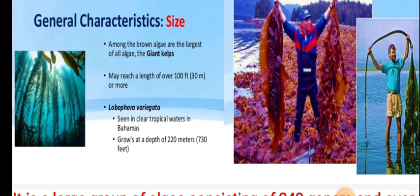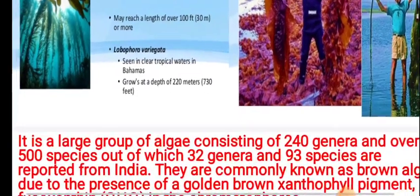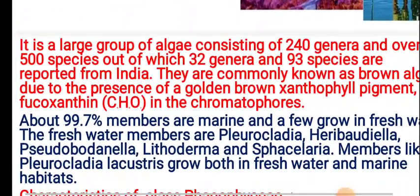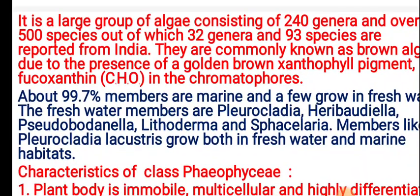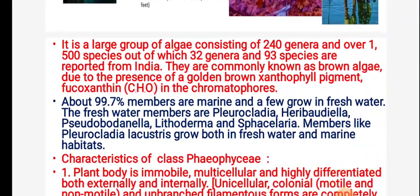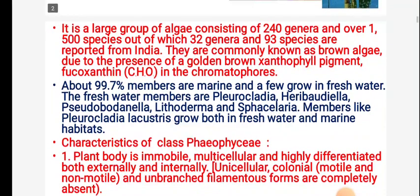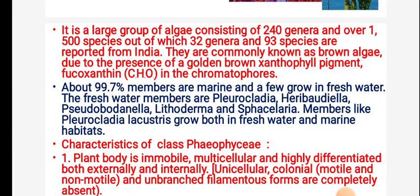The growth is very abundant. As a large group of algae, it consists of 240 genera and about 1500 species, out of which 32 genera and 93 species are reported from India. They are commonly known as brown algae due to the presence of the golden-brown xanthophyll pigment fucoxanthin, with formula C₄₂H₅₈O₆, found in the chromatophores.